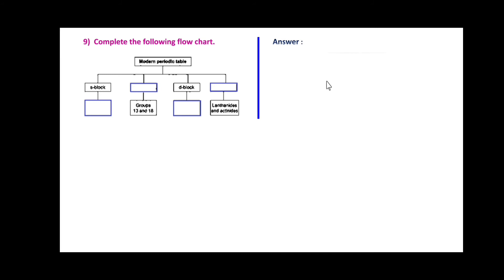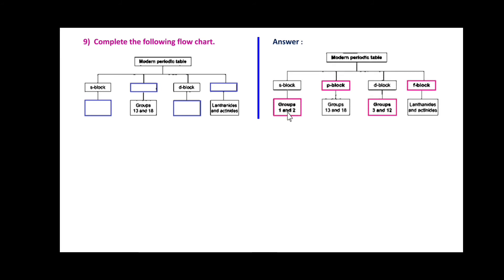Complete the following flowchart. Modern periodic table is given with different blocks, and we have to fill up four blanks. The completed chart will be: S-block is group 1 and 2, P-block is groups 13 and 18, D-block is groups 3 and 12, and F-block is the lanthanide and actinide series.